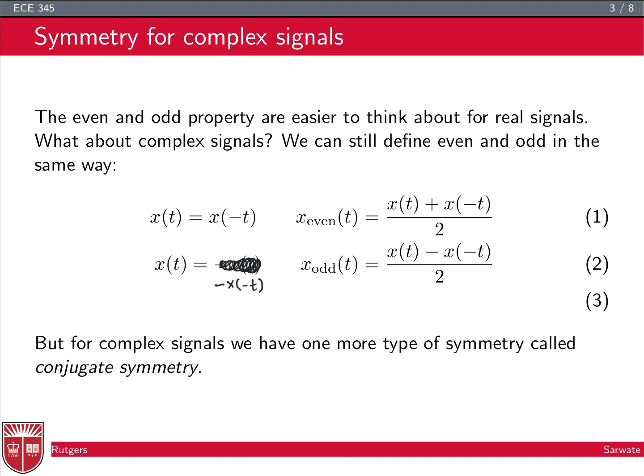For complex signals, we can still define even and odd signals. Even signals satisfy x(t) = x(−t), and odd signals satisfy x(t) = −x(−t). You can define even and odd parts, but there's a more important notion of symmetry called conjugate symmetry.